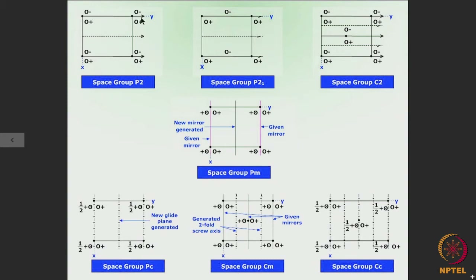At each point, this group of atoms will be generating another group 180 degrees away, attached to that particular lattice point. Similarly, this group of atoms will generate another group of atoms based on this lattice point. This is the space group P2, where the extended crystal will have the group of atoms associated with the lattice points, and these will produce some other groups as shown.